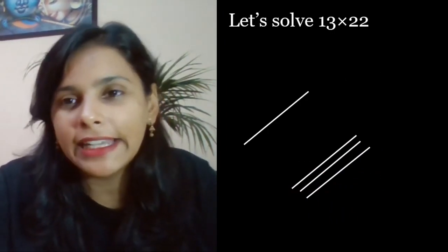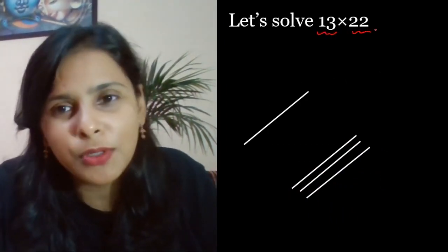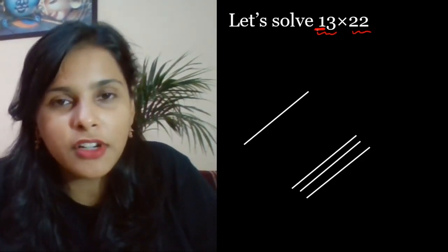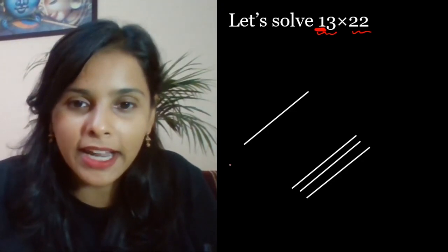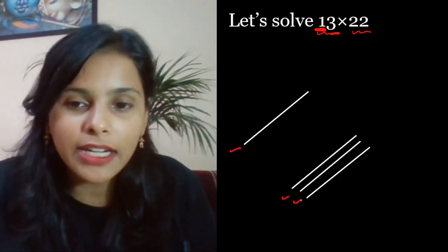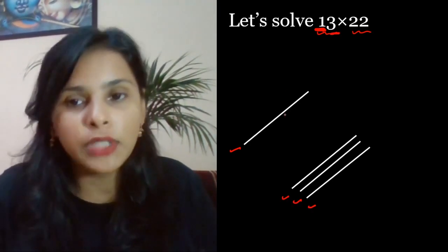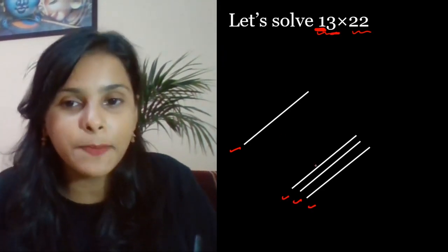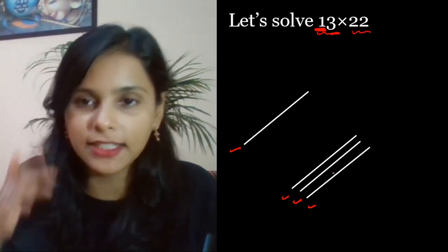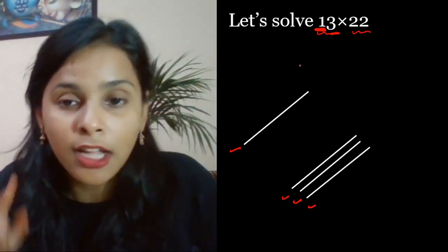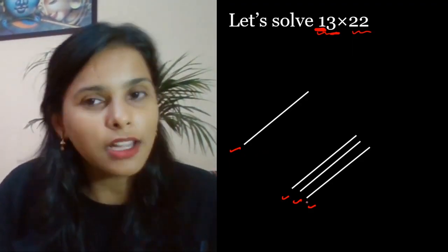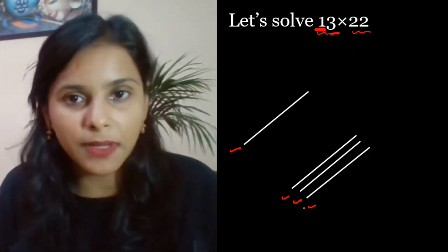Let's solve 13 into 22. What is the first digit? That is 1. So make one line. What is the next? 3. So we have created three lines parallel to that but with some space given. Make three other lines. Because the number was 13, the first digit was 1, so make one line with a little space given, then the rest of the 3 lines are made.